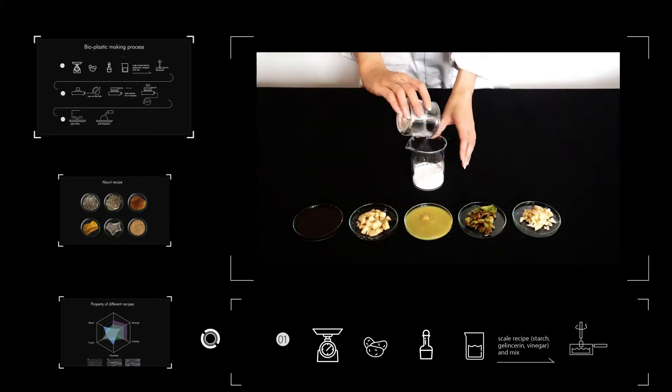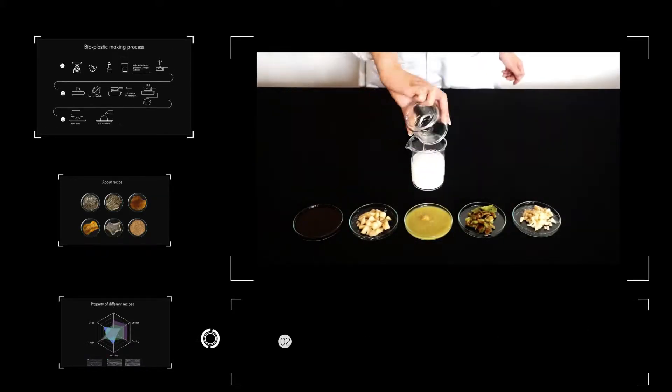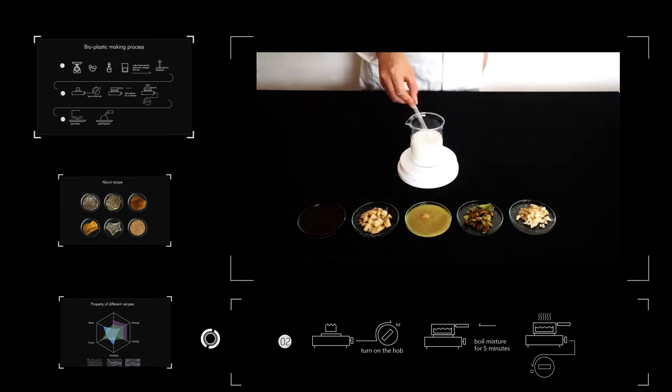The first step is extracting starch from food waste like potato, and then mixing all the ingredients including glycerin, vinegar, and water.